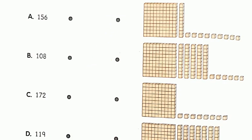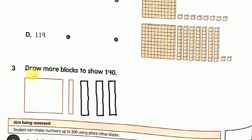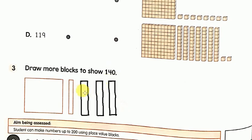I hope all are doing well. Coming to question 3: draw more blocks to show 140, but the number given to us shows only 1 hundred block and 1 tens block, which makes 110. We have to make it to 140. For that, we need to add 3 more ten blocks to make this number to 140.